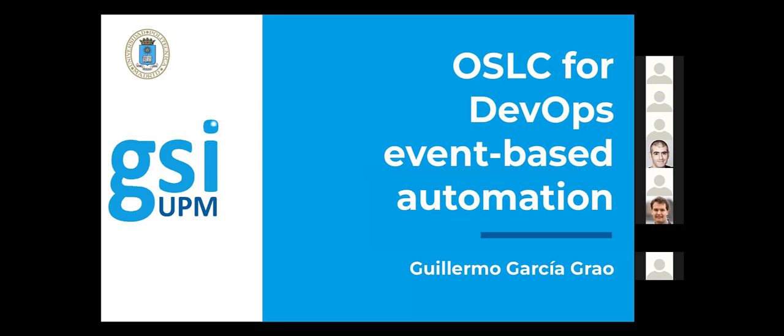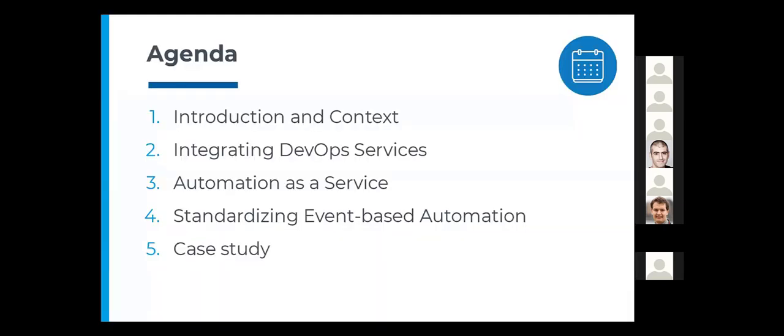Hello and welcome everyone. My name is Guillermo García. I'm a PhD student from the Technical University of Madrid and I'm going to talk about OSLC in the context of DevOps, particularly in scenarios where there is event-based automation. I'll start by giving you some context about my work, making an introduction to DevOps in general, presenting three challenges and their potential solutions. These challenges are integrating automation as a service and standardizing event-based automation. Finally, I'll explain a case study I developed as an example that faces all of these challenges.